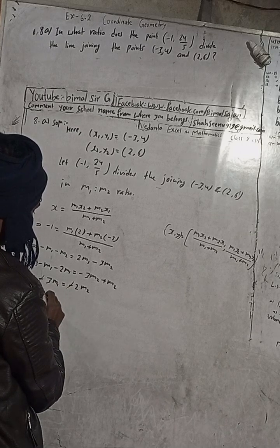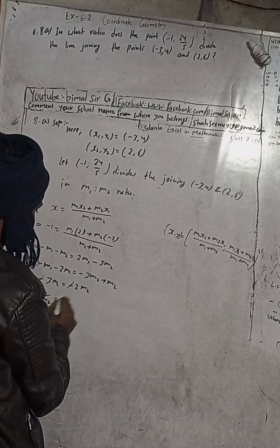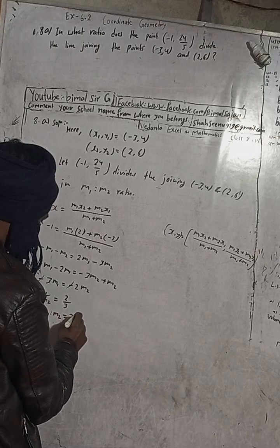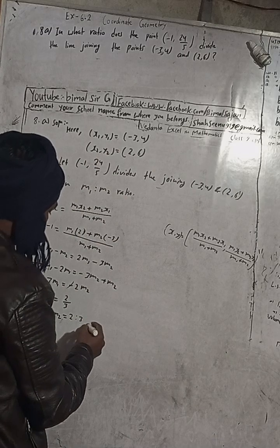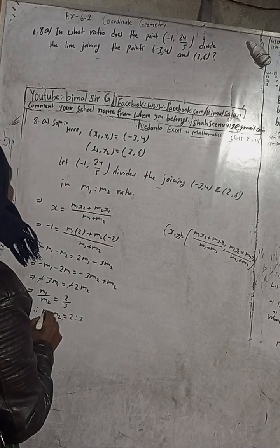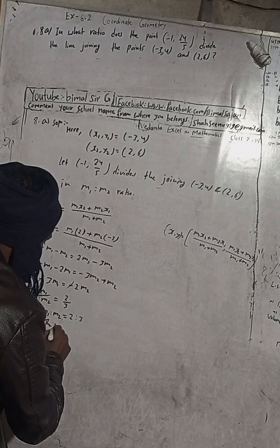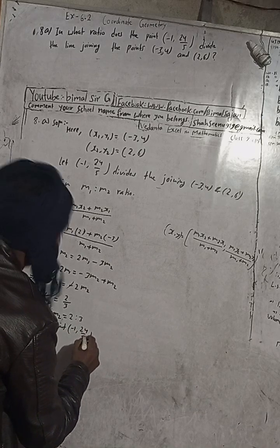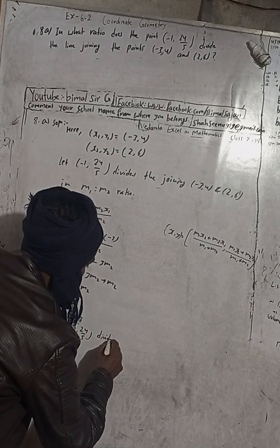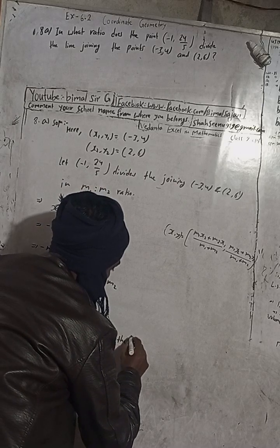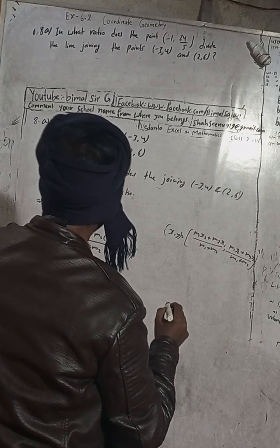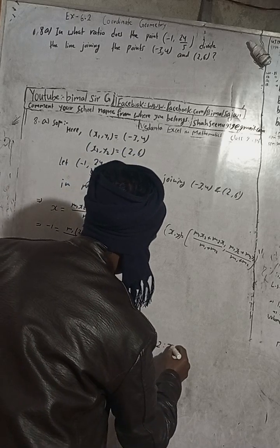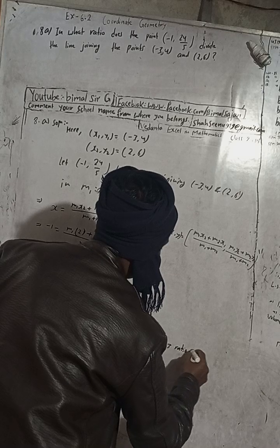Therefore m1/m2 = 2/3. So m1 is to m2 is equal to 2 is to 3. Therefore, the point (-1, 24/5) divides the line in the ratio 2:3 internally.